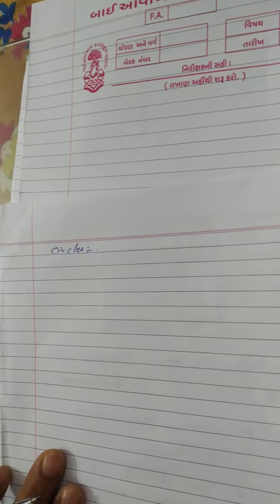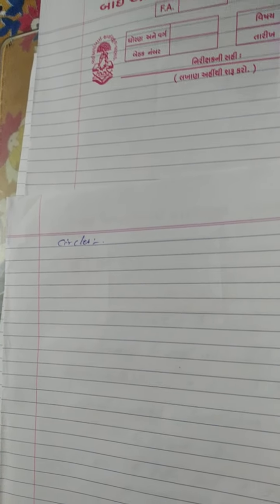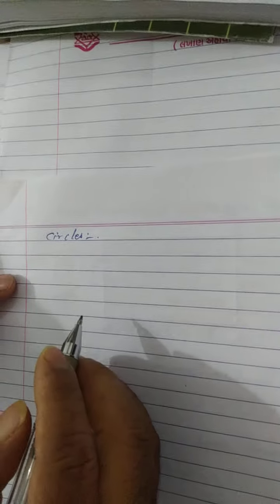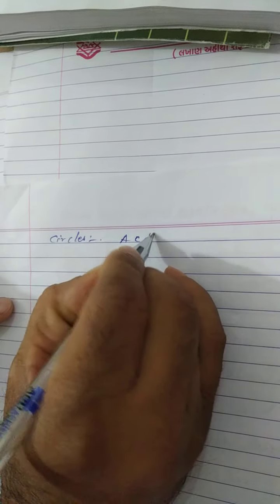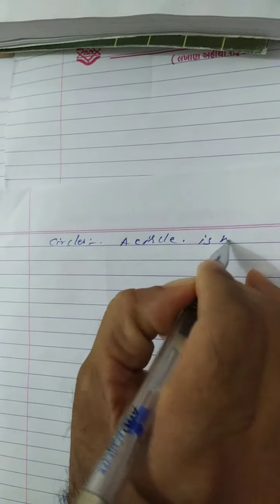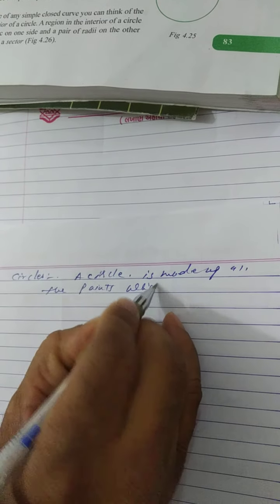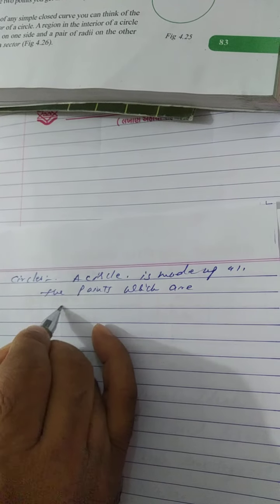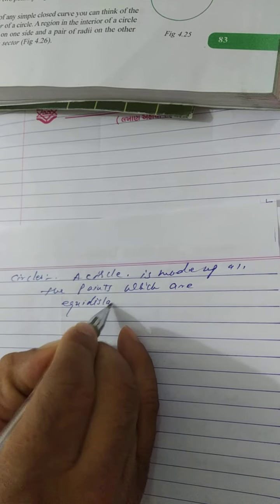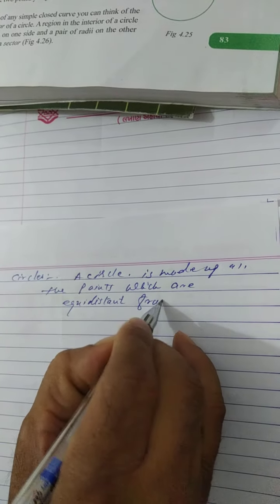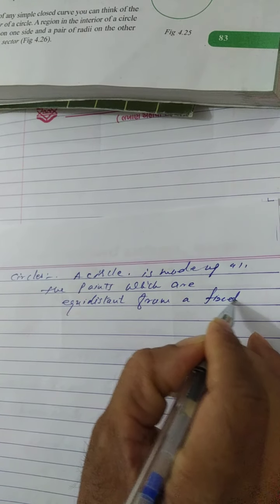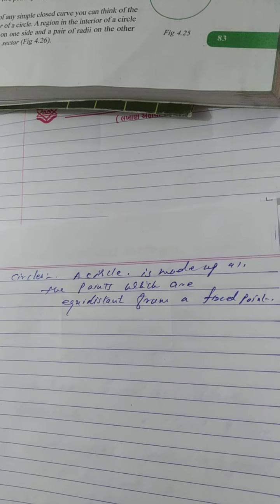Now we are going to learn about circles. What is a circle? A circle is made up of all the points which are equidistant from a fixed point called the center. So this fixed point is called the center.